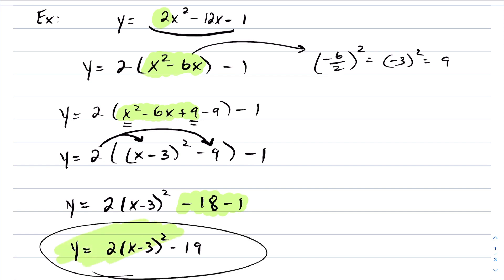Now I am in vertex form by completing the square — I went from standard form to vertex form. What's new in this example is that if you have a coefficient that is not 1, you have to factor that out of the first two terms. Then you complete the square as in the previous examples: identify your b value, divide by 2 and square it, add and subtract that value, forcing the perfect square. The only difference is you must distribute that 2 so you can collect the constant terms together, and then you're in vertex form.